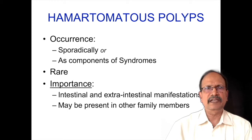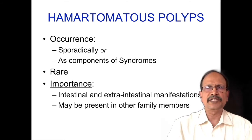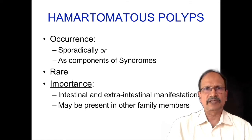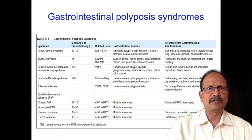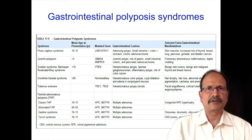Hamartomas can occur sporadically or as a component of a syndrome — this is very important. Hamartomatous polyps are associated with some syndromes. It is rare, and the importance is that these patients may have extra-intestinal manifestations and may be present in many family members. Examples of hamartomatous syndromes include Peutz-Jeghers syndrome, Juvenile polyposis, Cowden syndrome, Cronkite-Canada syndrome, and also fibrosclerosis.